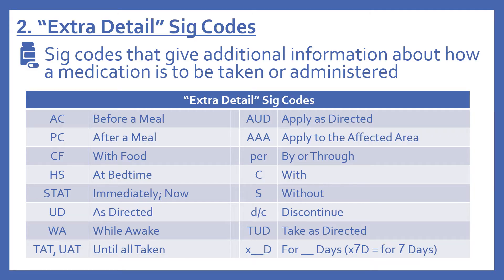Next are what I call the extra detail SIG codes. These give additional information about how a medication is to be taken or administered. AC means before a meal, PC means after a meal, CF means with food, HS means at bedtime, STAT means immediately or now, UD means as directed, WA means while awake, TAT or UAT means until all are taken, AUD means apply as directed, AAA means apply to the affected area, PER means by or through, C means with, S means without, DC means discontinue, TUD means take as directed. And X with a number and a D means for however many days — so X7D would mean for seven days.